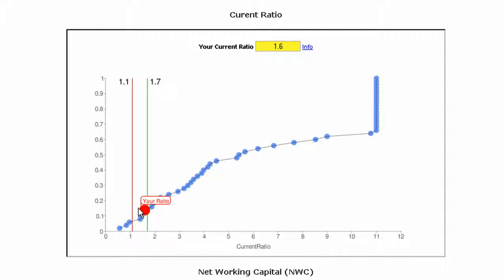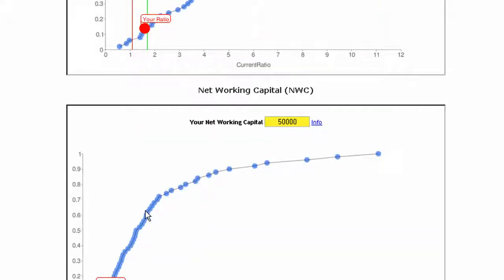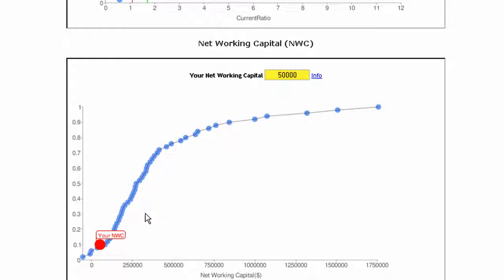The vertical lines provide some guidance as to where we want to fall in the graph. Generally, it's better to be somewhere around the green line, and in this instance, a current ratio of 1.6 is acceptable. The process is virtually the same for the rest of the graphs.